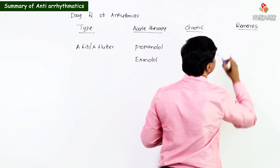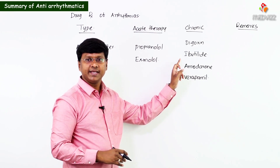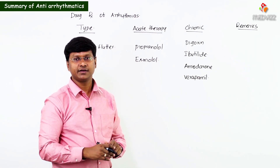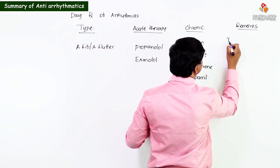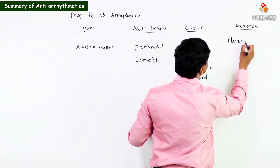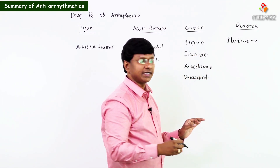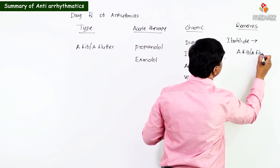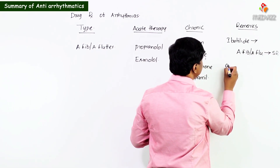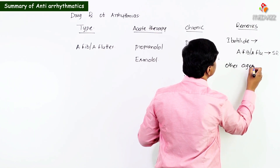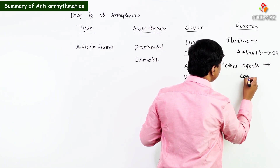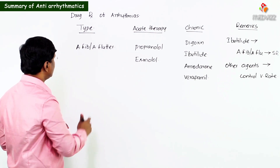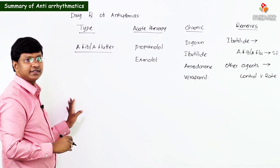An important remark: only ibutilide is indicated for conversion to sinus rhythm in atrial fibrillation or atrial flutter. The other drugs — digoxin, amiodarone, and verapamil — control the ventricular rates only.